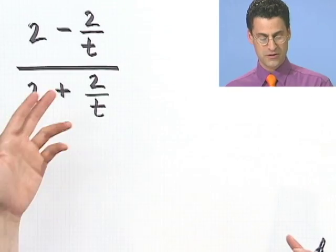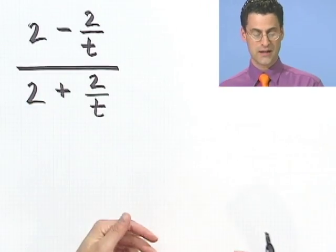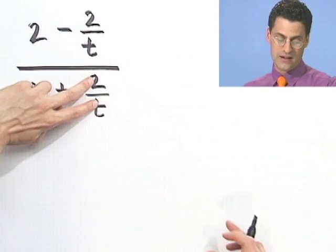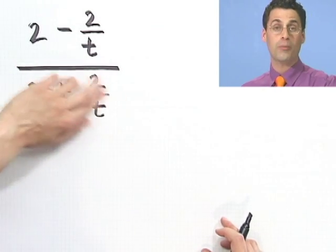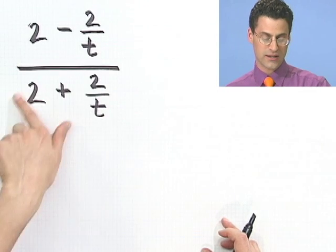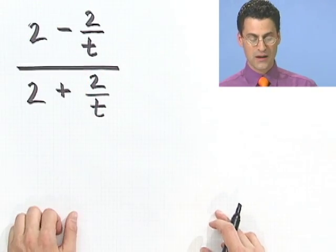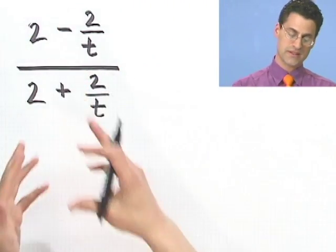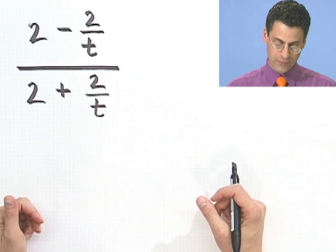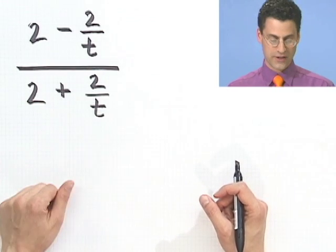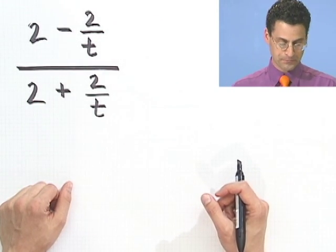2 minus 2 over t, divided by 2 plus 2 over t. You might want to think about inverting and multiplying, but you can't do that here because you only invert the whole bottom. So you have to get a common factor here and invert and multiply. There are two ways of dealing with this kind of thing, and let me talk to you about both of them.